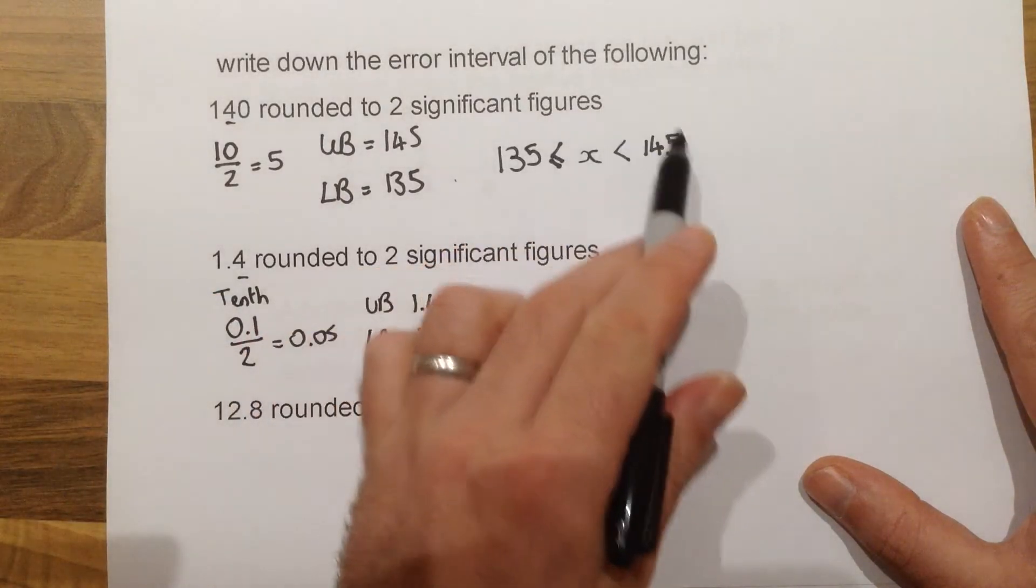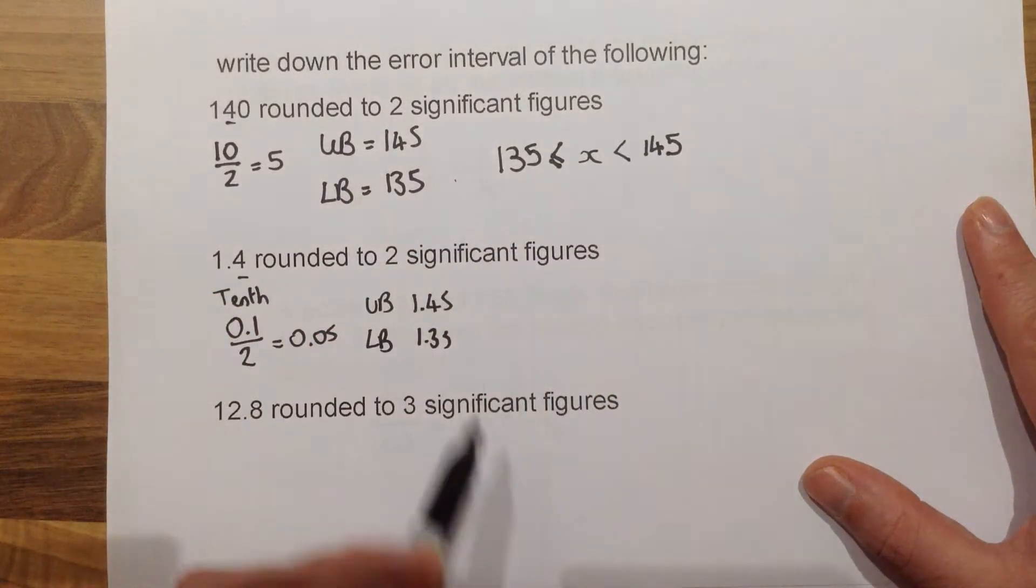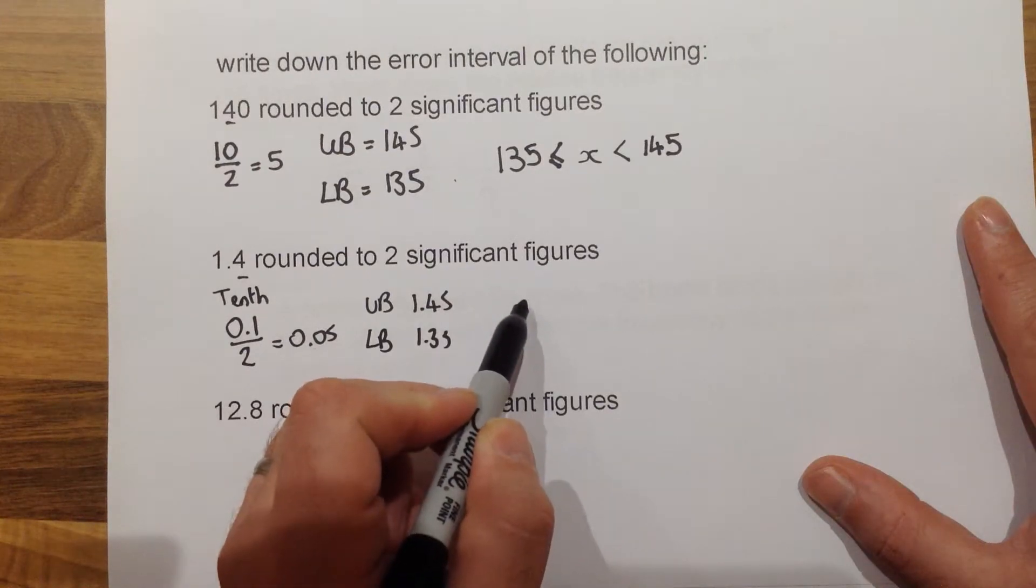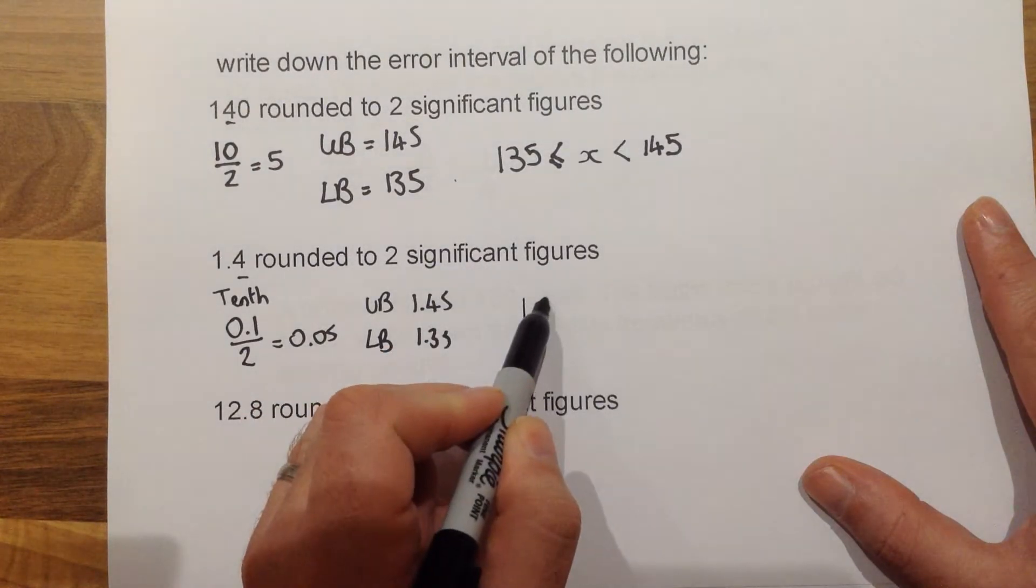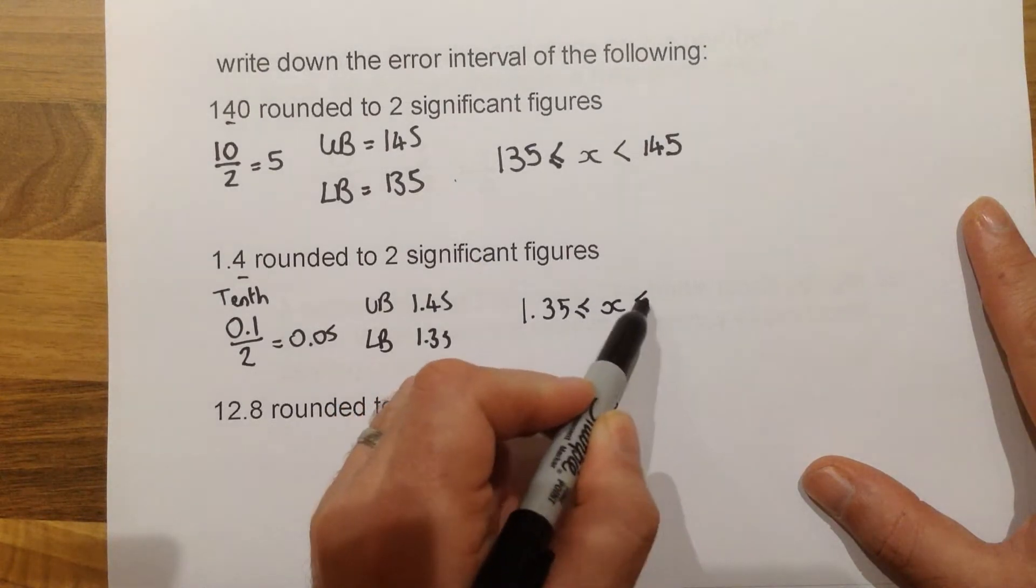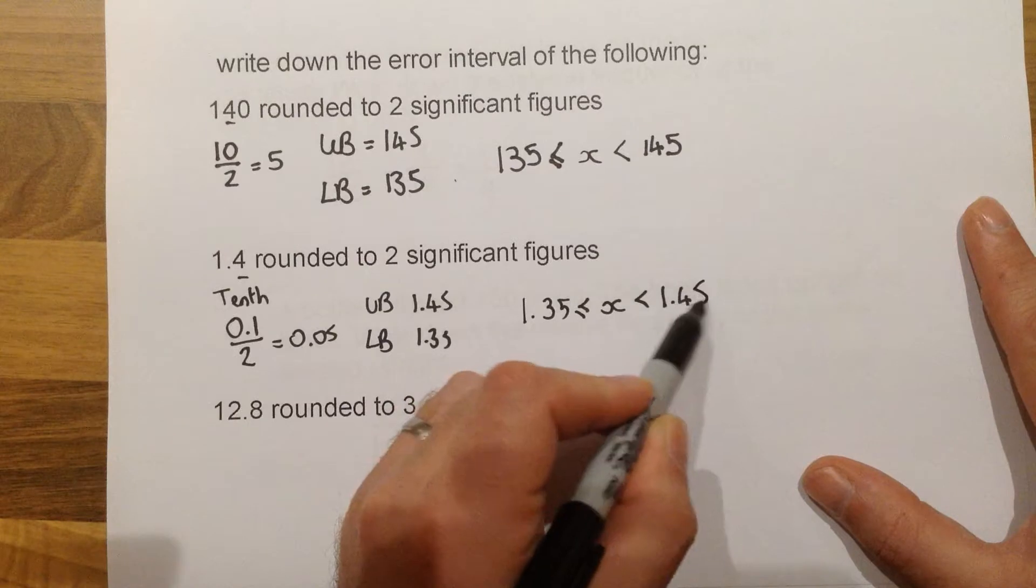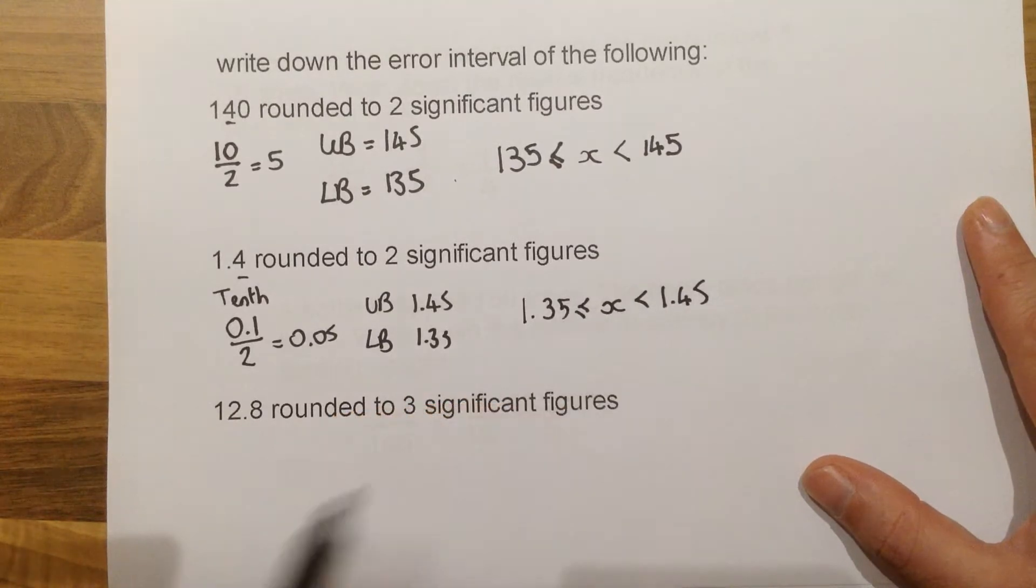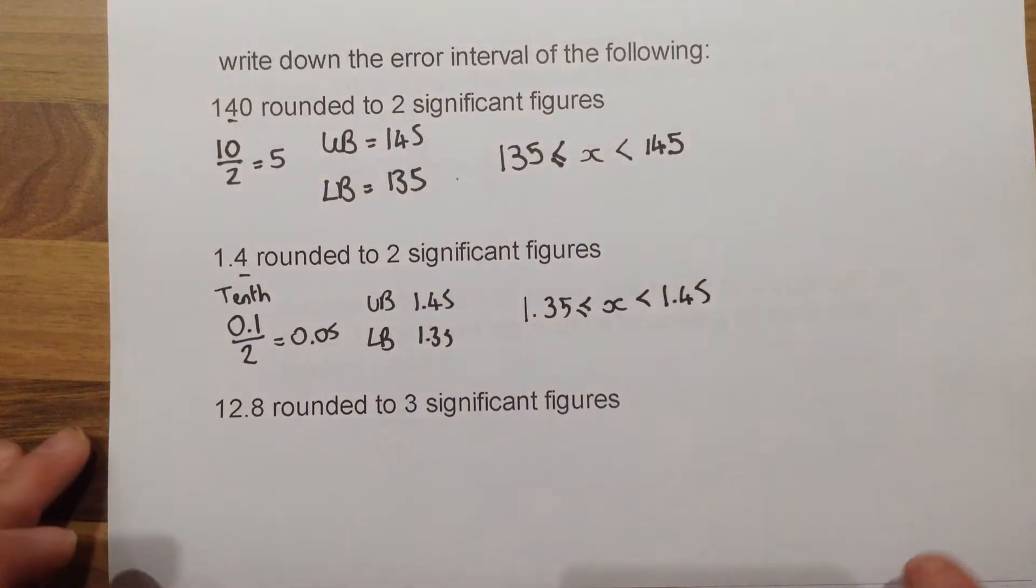We can use the exact same idea as the question before, to get our interval of error, our error interval. So 1.35 less than or equal to X less than 1.45. This section in the middle will never change. That will always look the same.